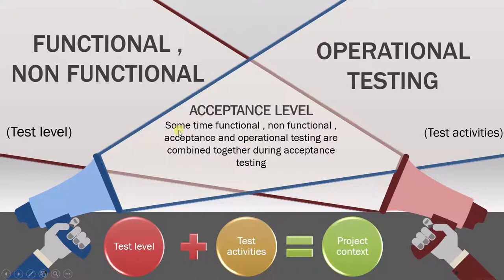We want to do an acceptance level testing. Sometimes functional, non-functional, acceptance, and operational testing are combined together during acceptance testing. So to achieve acceptance level testing, we combine the test level and test activities here.